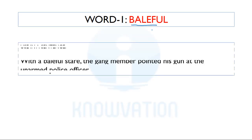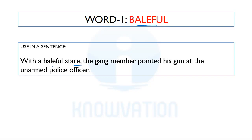Let's see it in a sentence. With a baleful stare, the gang member pointed his gun at the unarmed police officer. Now you can understand the scenario here — a person is pointing a gun at a police officer. So his stare should be what? Should not be happy of course. So this word is negative in meaning.